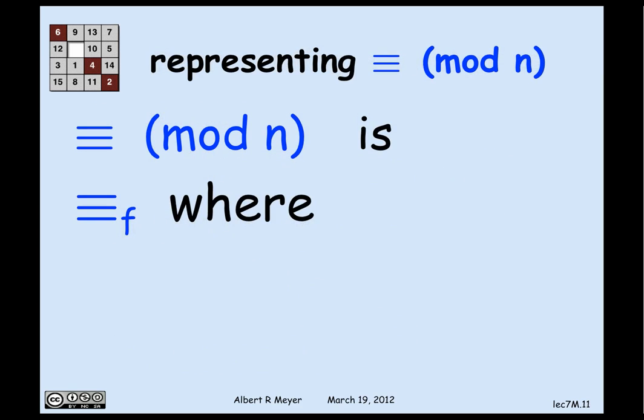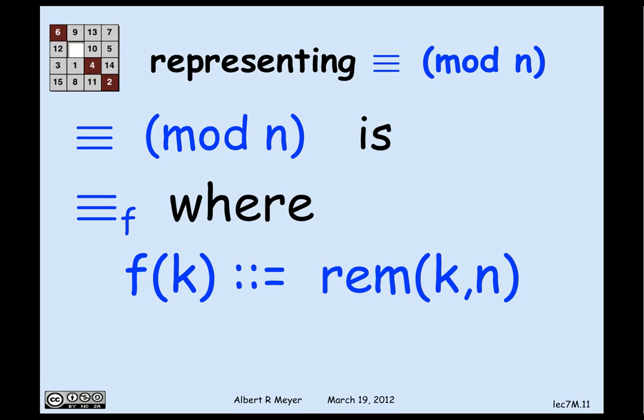Congruence mod n can be understood as ≡_f, where the mapping sends a number to its remainder on division by n. Two numbers are congruent mod n if and only if they have the same remainder. So mapping a number k to its remainder f(k) gives the ≡_f representation of congruence — another way to verify that congruence is an equivalence relation.